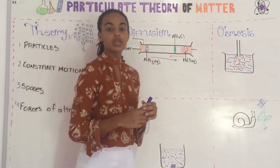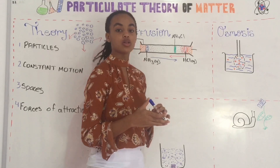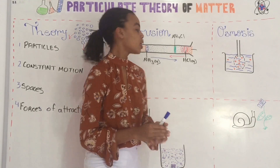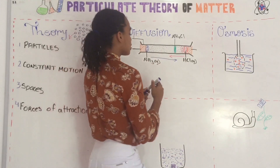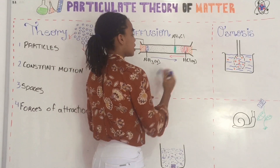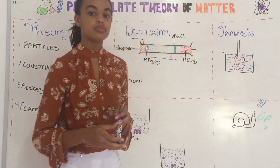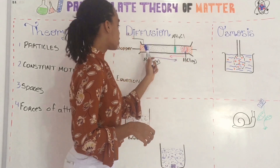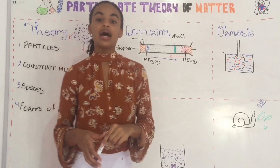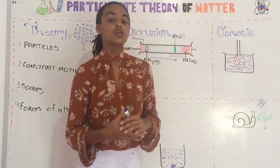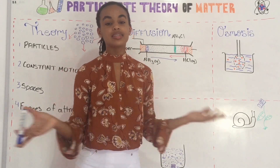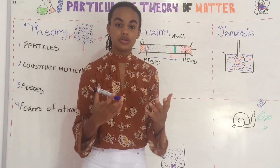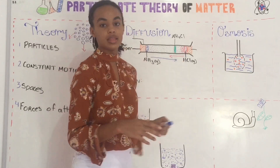So what you would notice is that ammonia has travelled a greater distance than the hydrogen chloride. Why? Ammonia is lighter than hydrogen chloride, so it travels faster. So when the hydrogen chloride and the ammonia meet, they combine to produce ammonium chloride, which is usually a white solid. So we have diffusion from the high concentration on both sides, and they meet and react to form ammonium chloride. This experiment helps us to know that there is actually diffusion taking place, because if there wasn't, the ammonia and the hydrogen chloride wouldn't be able to react to form ammonium chloride in the test tube.